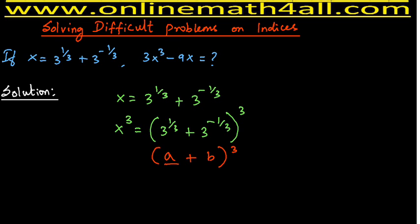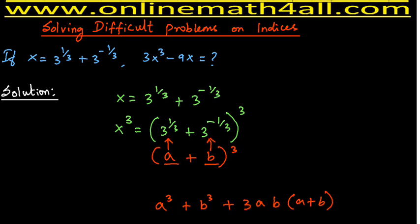In this expression, instead of a we have 3 to the power 1/3, and instead of b we have 3 to the power negative 1/3. The expansion of (a + b)³ is a³ + b³ + 3ab(a + b). This is the only trick we apply in this problem — we apply the identity (a + b)³ to get the answer for 3x³ minus 9x.